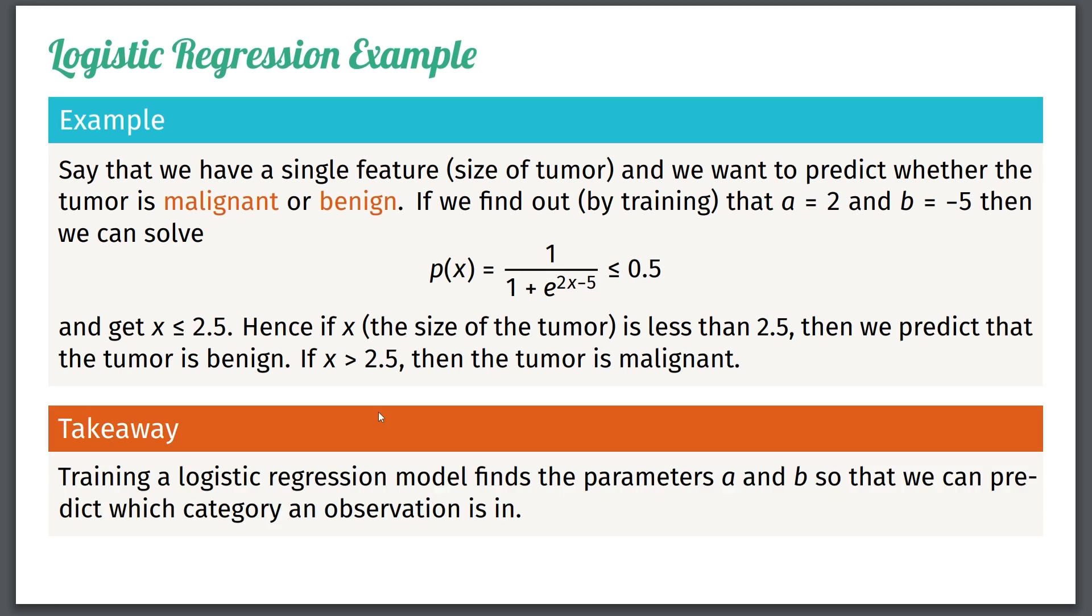So the key takeaway is that training a logistic regression model finds these parameters a and b, the one we just assumed was 2 and minus 5 in this case, so that we can do essentially the above computation and predict which category an observation is in. Once we start with the coding, a lot of this will be automated by scikit-learn.